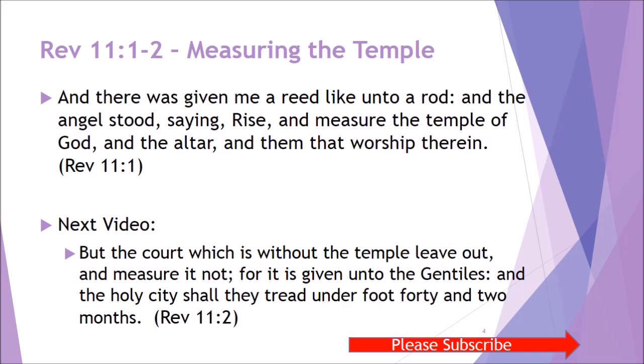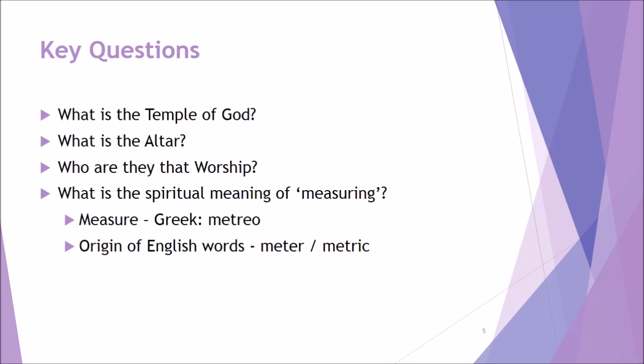In the next video we're going to look at the court of the temple, which is outside the temple — it is not measured. We'll see a distinction between that which is measured and that which is not measured. That which is not measured is given unto the Gentiles. But for now, let's look at the measuring of the temple. The key questions are: what is the temple of God, what is the altar of God, and who are they that worship therein? We know Revelation is symbolic, so it's not a literal measuring — it's a spiritual measuring, based on the Greek word 'metro,' which means to measure.